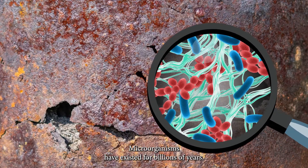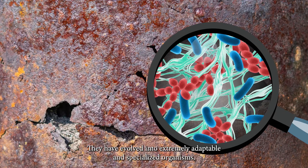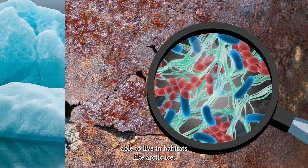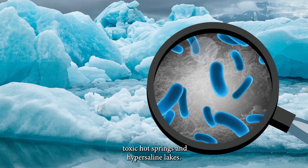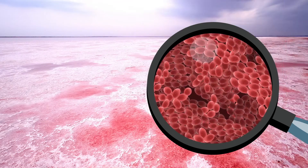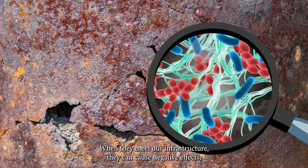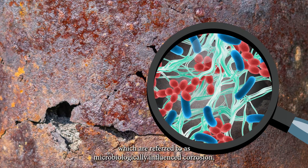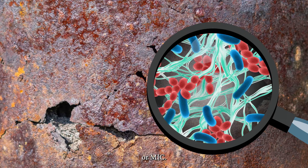Microorganisms have existed for billions of years. They've evolved into extremely adaptable and specialised organisms able to live in habitats like arctic ice, toxic hot springs and hypersaline lakes. When they meet our infrastructure, they can cause negative effects which are referred to as microbiologically influenced corrosion, or MIC.